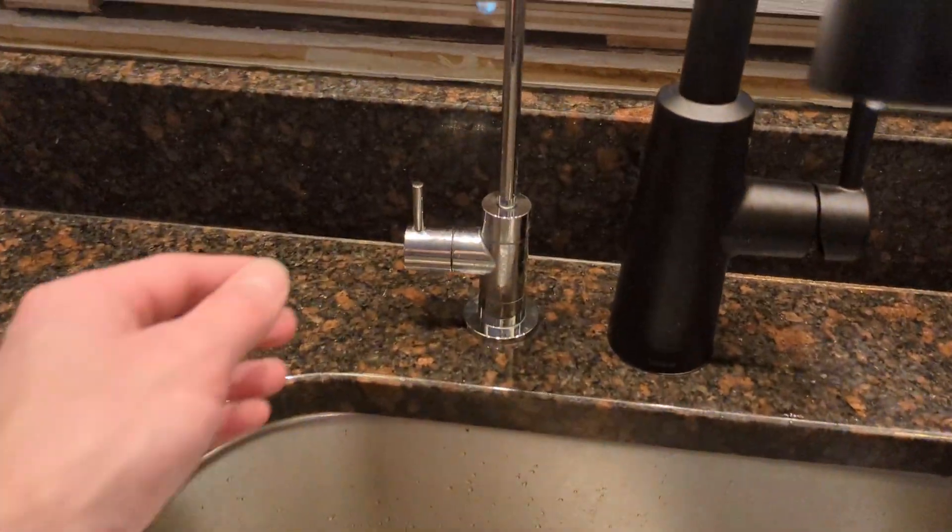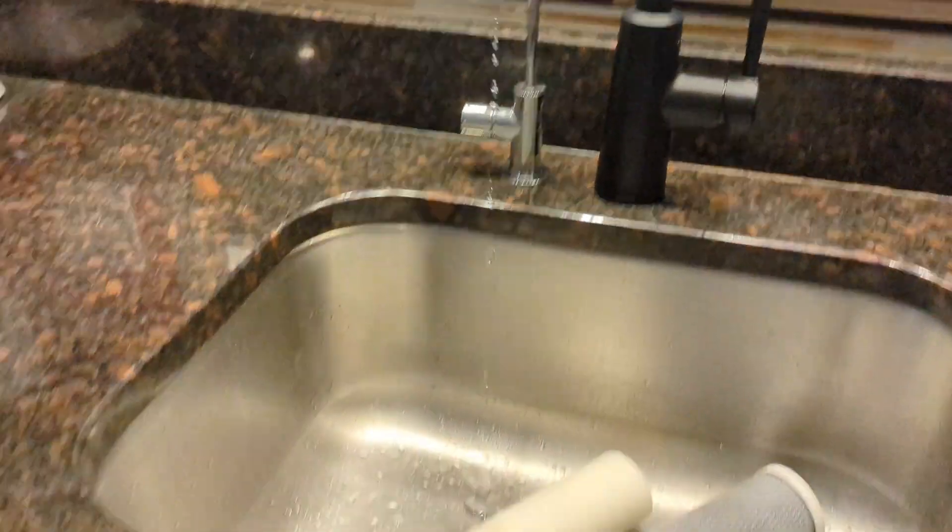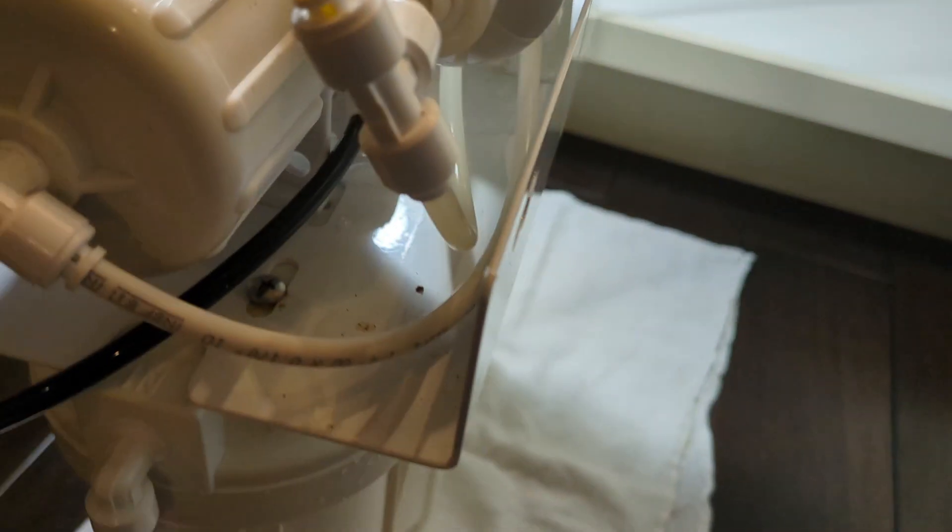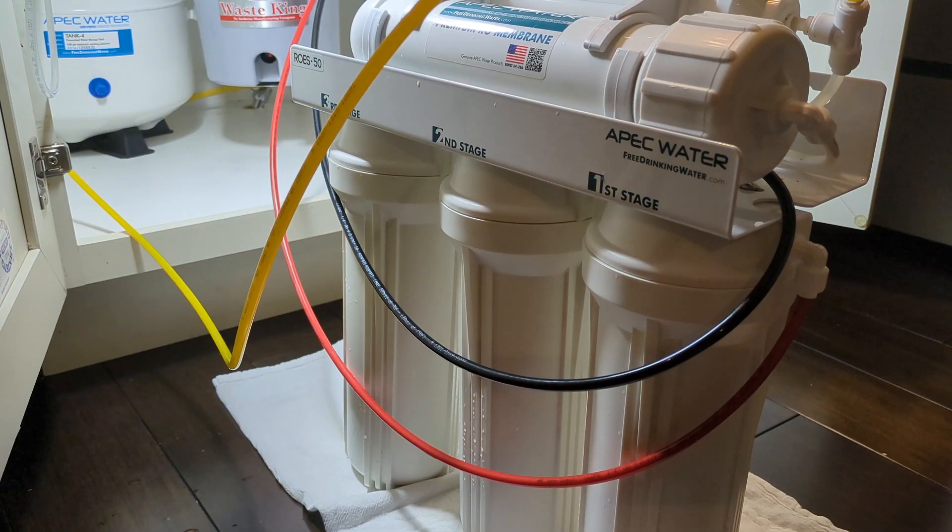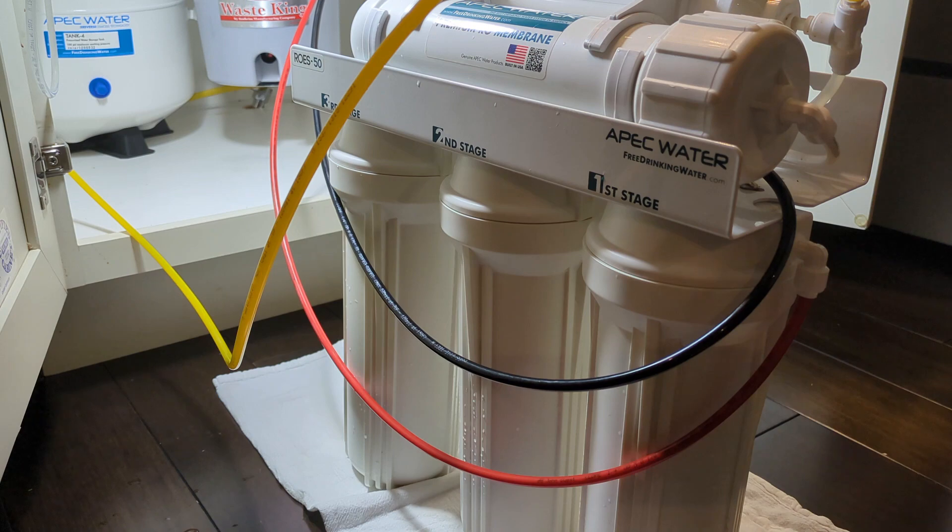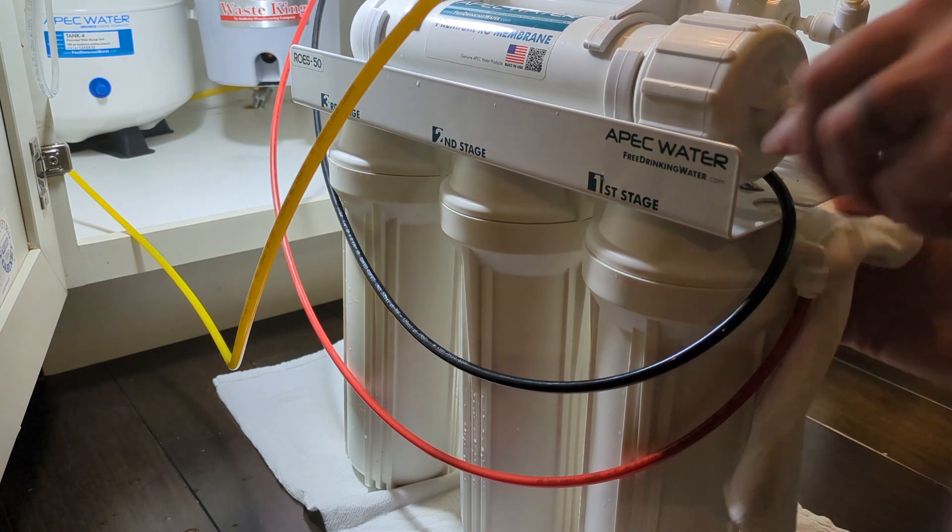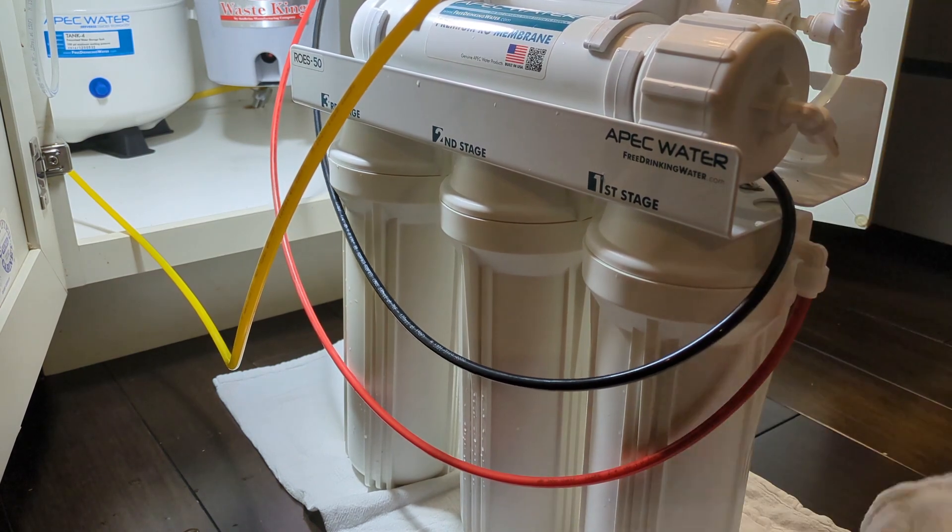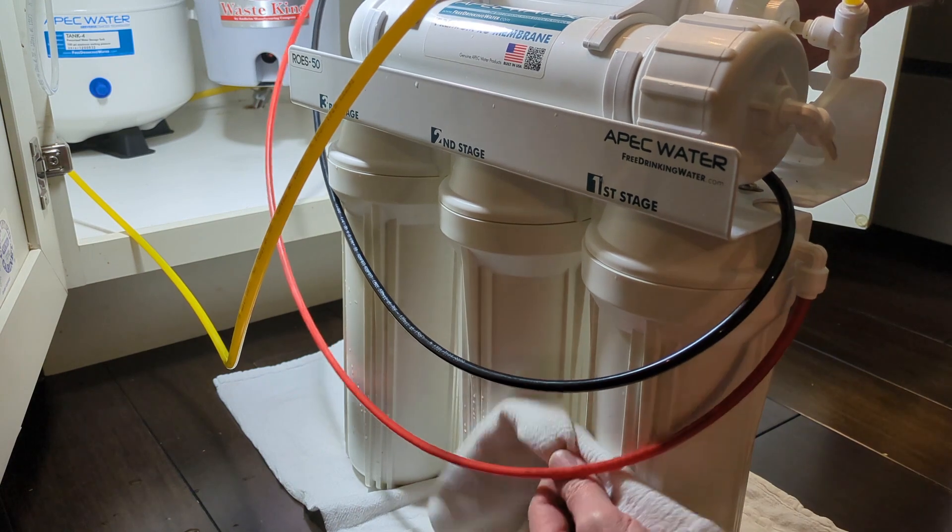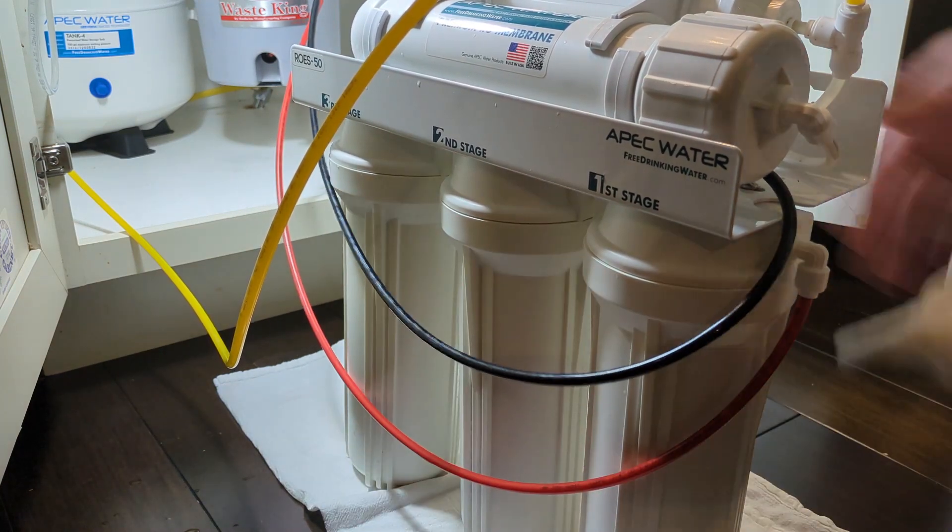It says turn on the faucet lever and let purified water run for 10 to 15 minutes. So while it's doing this filling up I'll be checking for leaks. I'll also dry off any water spots here so it'll be easier to see if anything's leaking. It needs to be tightened a little more.